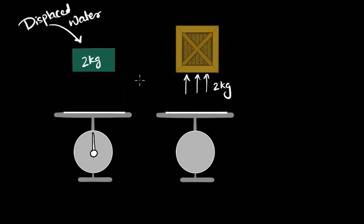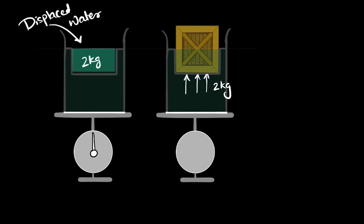Do you understand why Archimedes' principle is true? Well, if this displaced water is two kilograms, then the rest of the water must be supporting that two kilograms, pushing up on it with a force of two kilograms — otherwise it wouldn't be stable. But if this water is pushing up with two kilograms, the bottom is the same on both sides, and therefore the force with which it pushes up has to do with atmospheric pressure, nature of the liquid, and depth — all of which are the same. That's what Archimedes' principle is all about.